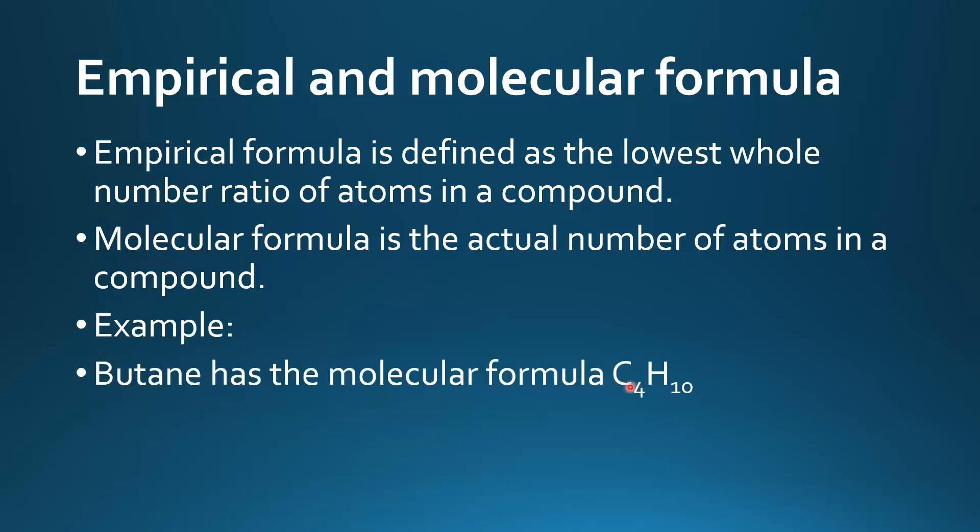For example, butane has the molecular formula C4H10. One molecule of butane has 4 carbon atoms and 10 hydrogen atoms. The empirical formula of butane is C2H5. This is the lowest whole number ratio of atoms in butane.